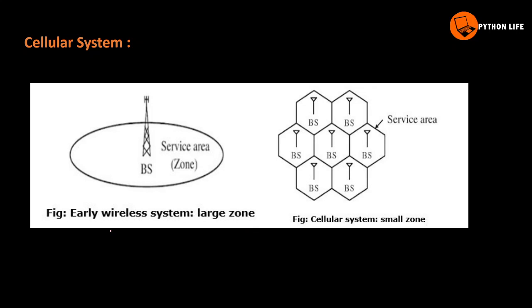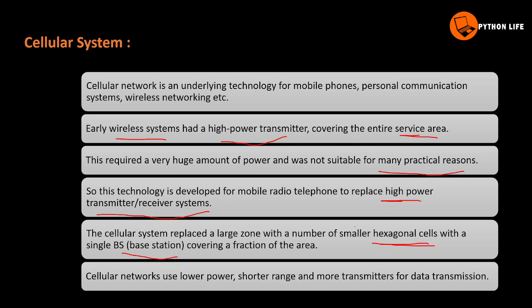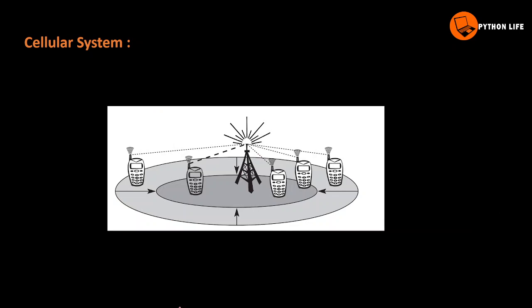In the early wireless system, there was a large zone with a single tower covering the entire area. Now in the cellular system, there are multiple base stations interconnected, covering the entire area. This shows the difference between high power consumption transmitters and the cellular system with a mobile system for communication.